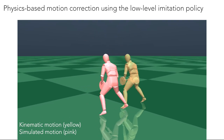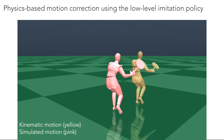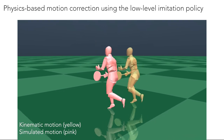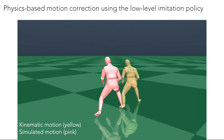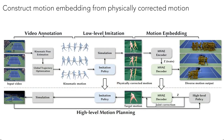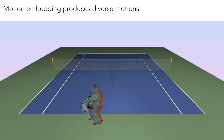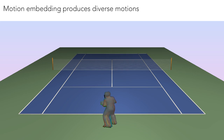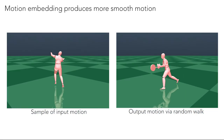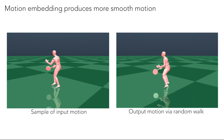To address these artifacts, we train a low-level imitation policy to control a physically simulated character to track these noisy kinematic motions and output physically corrected motions. The resulting motions after correction are more physically plausible and stable compared to the original kinematic motions. With the corrected motion dataset, we can construct a kinematic motion embedding by fitting conditional VAEs to the motion data. Given the same initial pose, diverse motions can be generated by sampling different trajectories of latent codes. An additional benefit of the motion embedding is that it can help smooth the motions and mitigate some of the jittering artifacts in the original motion data.